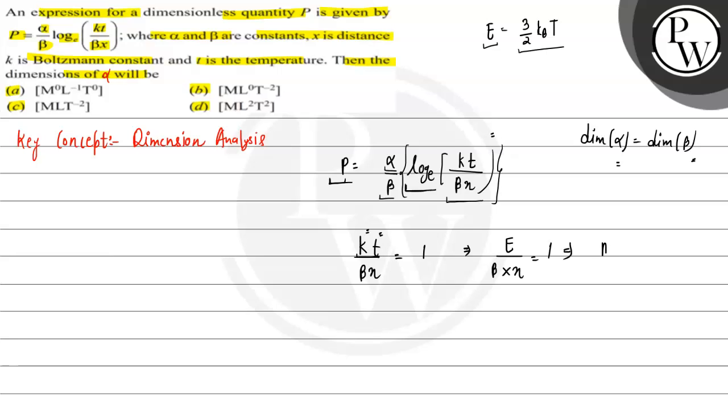Here the dimension of energy is ML²T⁻². Energy equals beta into x. x is the distance, so this has dimension of length. From here we can see that beta equals ML²T⁻², which is the dimension of beta, which is also the dimension of alpha.